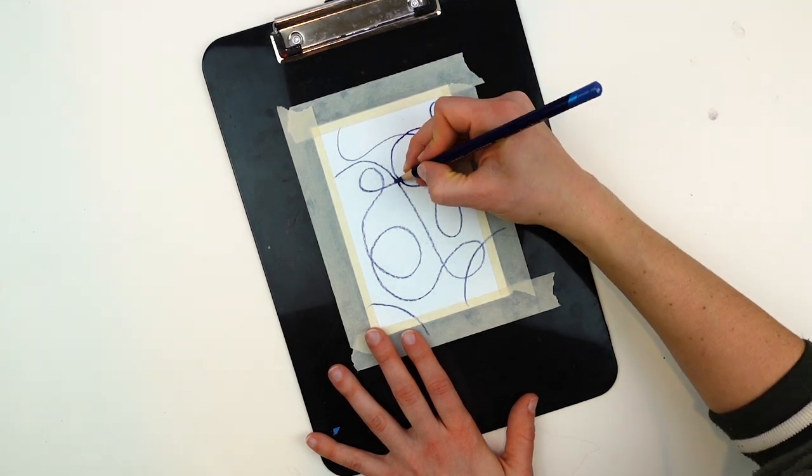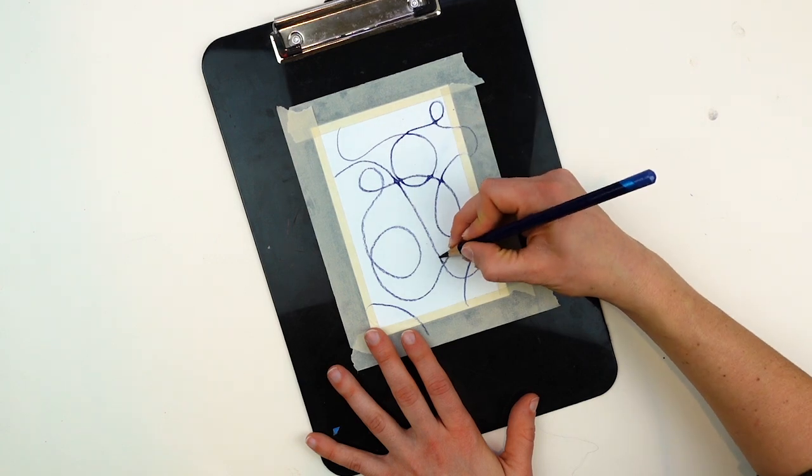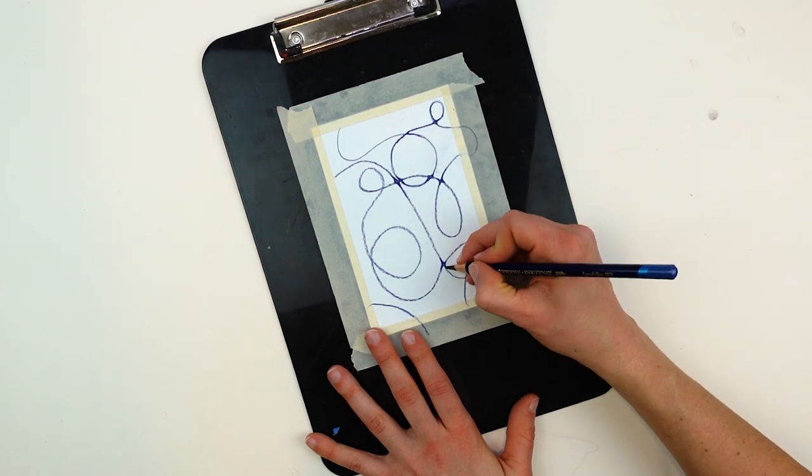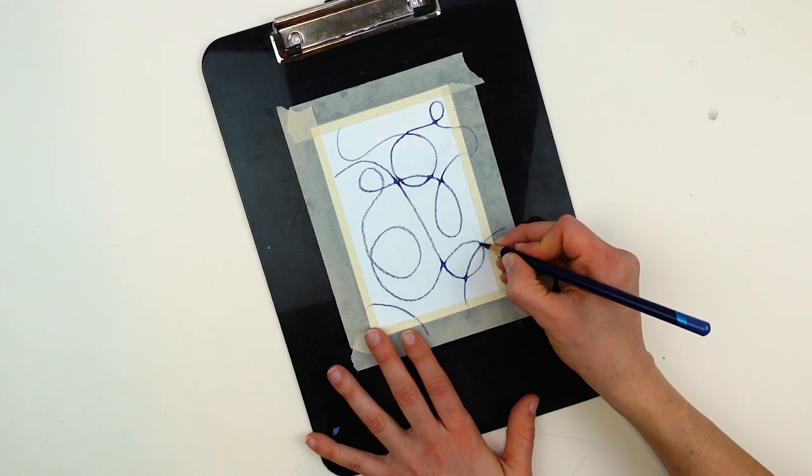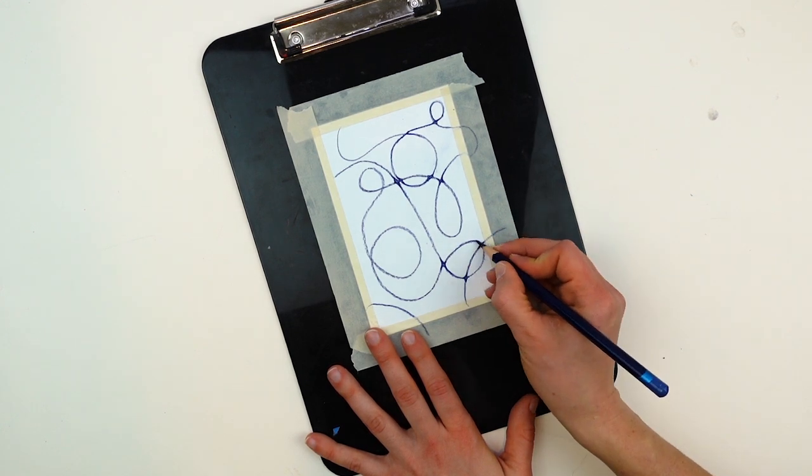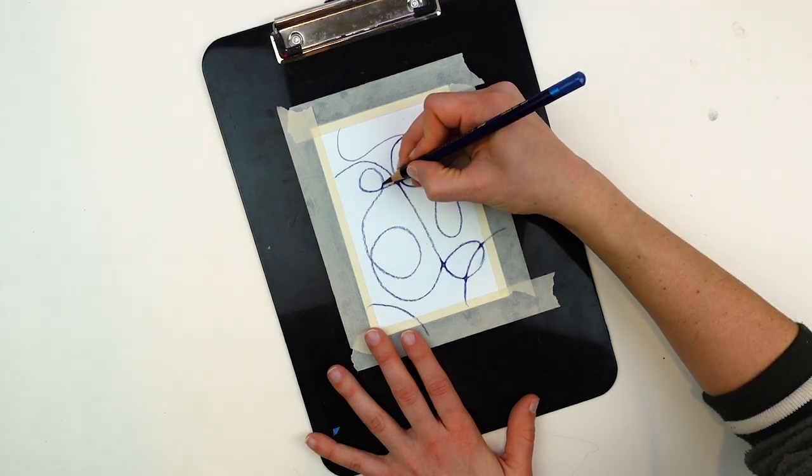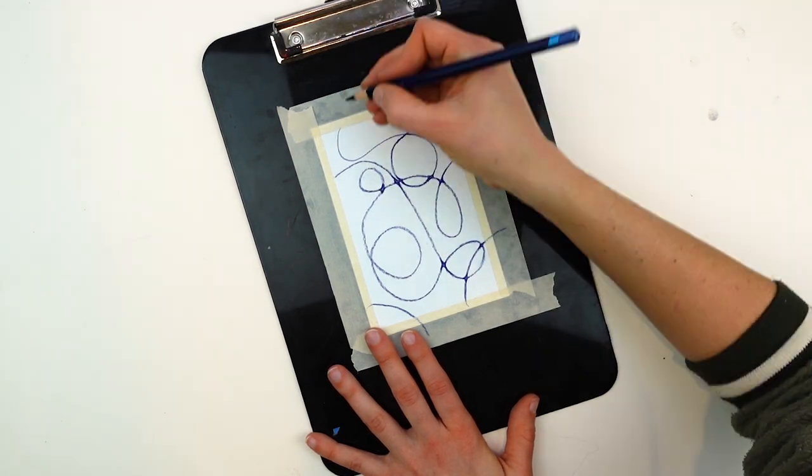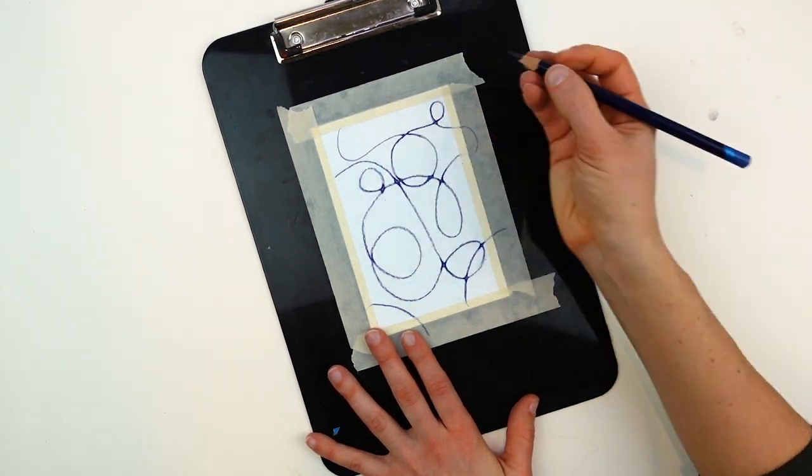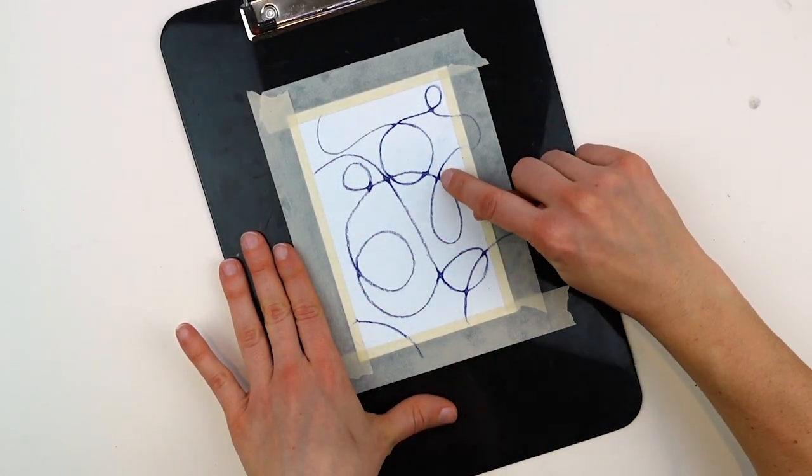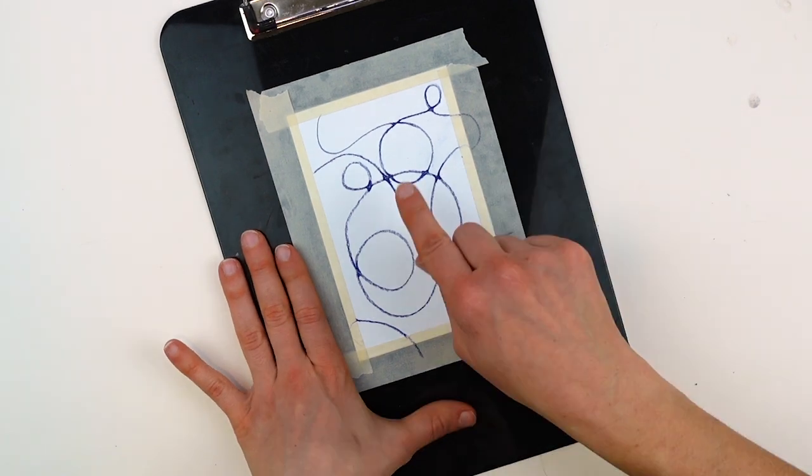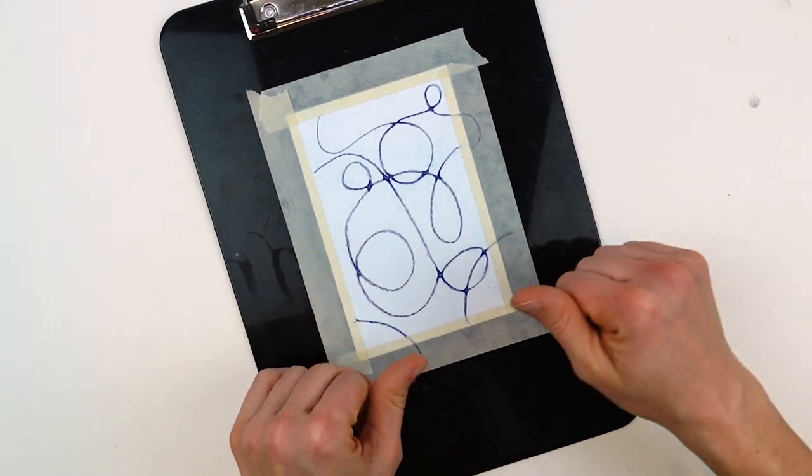Being here, being present, having something that kind of has some rules and some structure to it, but doesn't really require you to come up with anything can be a really relaxing process. This has been used with PTSD patients. And I have personally used this technique to reduce stress and anxiety. Phase one is complete when the line work is finished and those little intersections have been rounded out. Now I am going to move on to phase two.